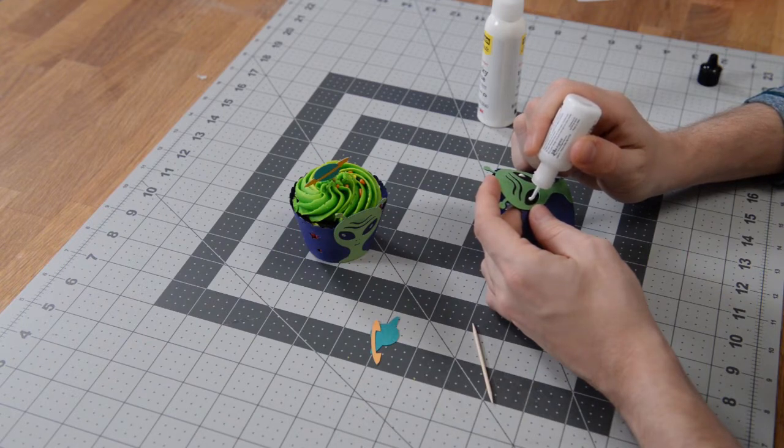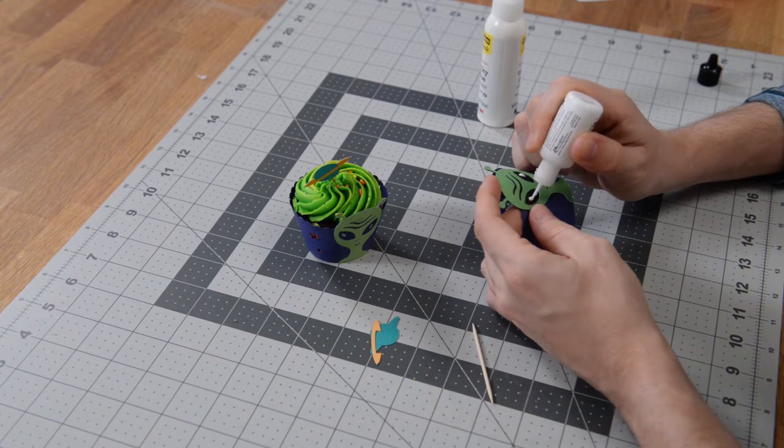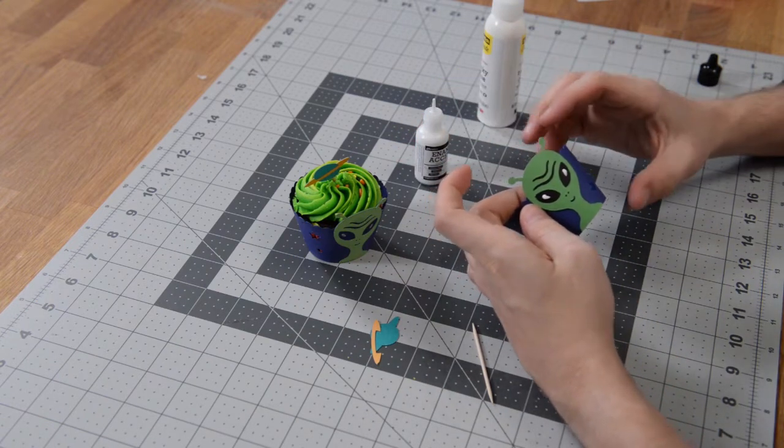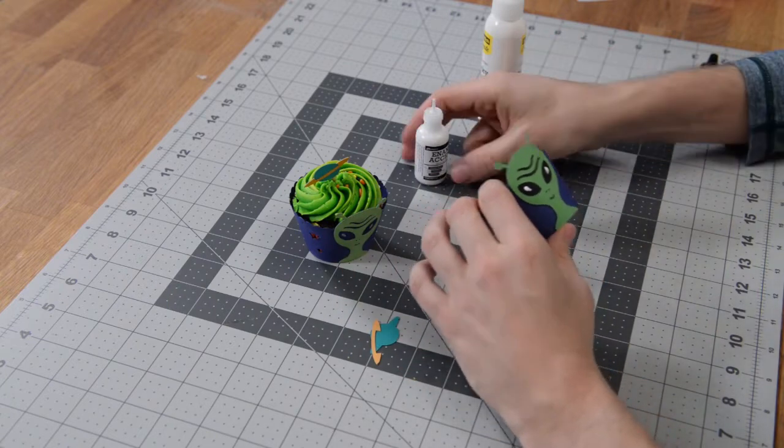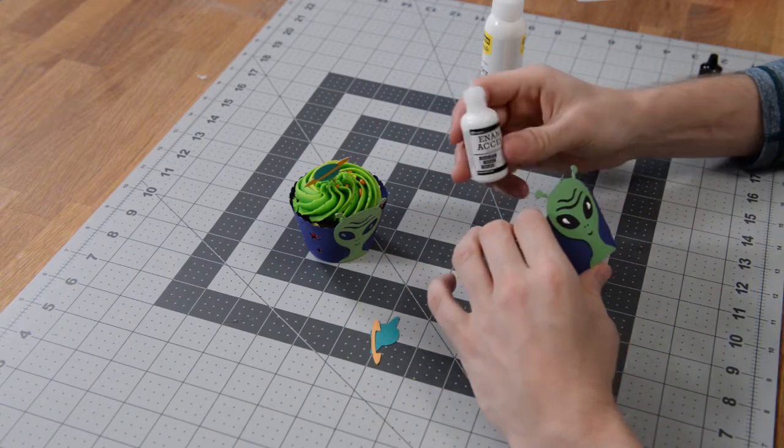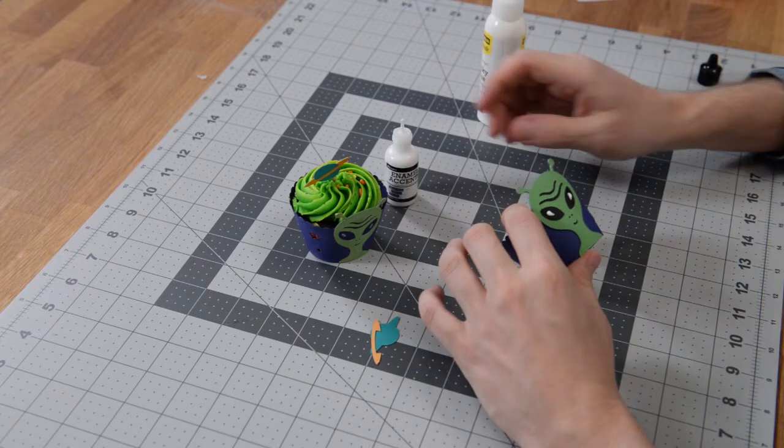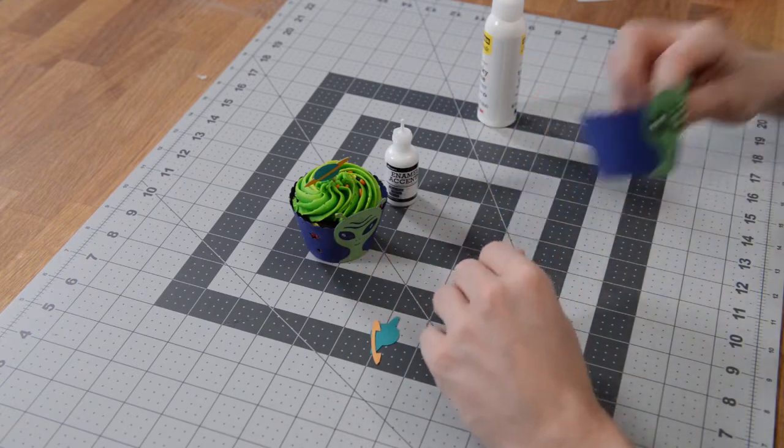Now those are a little bit larger. I actually use liquid pearls - these are Enamel Accents by Ranger. I don't think they work as well for this sort of thing, but that's still cute. And I actually used silver instead of the white that I just showed you, but you get the idea.